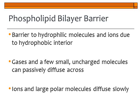Due to the nature of the phospholipid membrane, phospholipids create a barrier for hydrophilic molecules and also for ions, because the phospholipid bilayer has a hydrophobic interior — those two fatty acid tails face inward. Gases and a few small uncharged molecules like oxygen, carbon dioxide, and some really small molecules can pass diffusively across. Larger molecules, ions, or polar hydrophilic molecules diffuse more slowly, and some cannot diffuse at all — they must use facilitated diffusion.